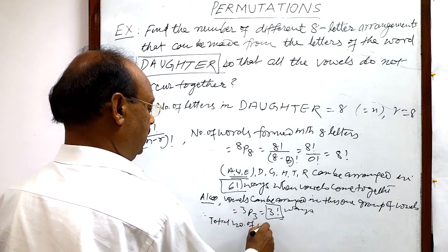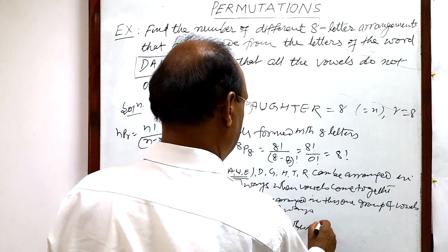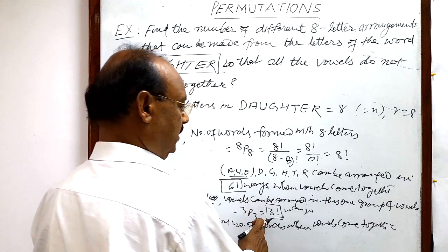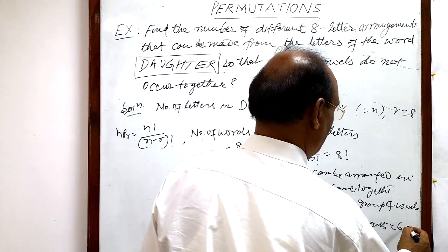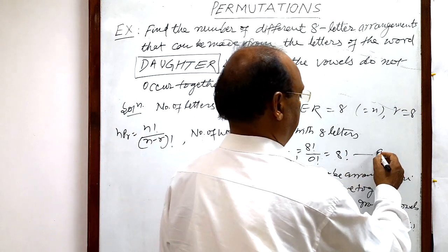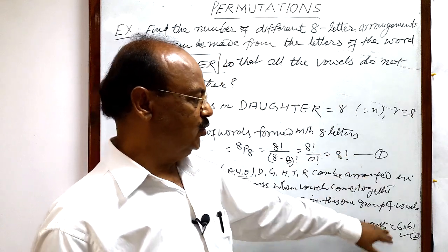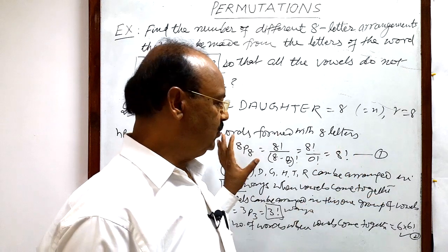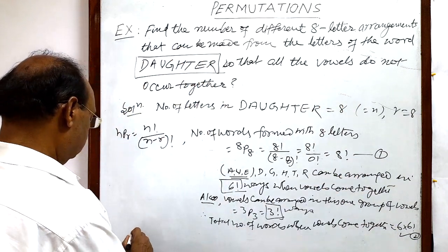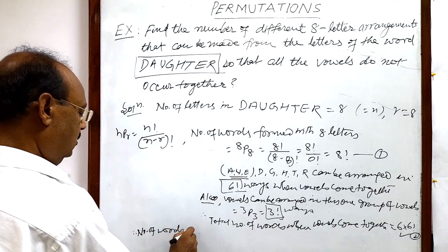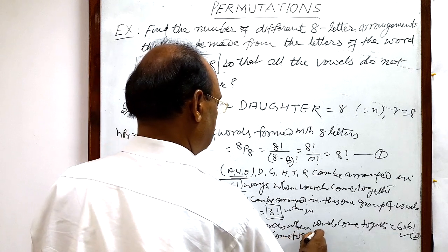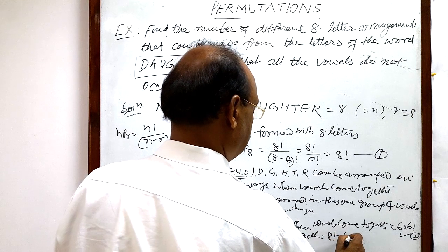So the total number of words when vowels come together equals 3 factorial times 6 factorial, which is 6 into 6 factorial. This is Case 1 (all arrangements) and Case 2 (vowels together). The number of words when vowels do not come together is Case 1 minus Case 2, which equals 8 factorial minus 6 into 6 factorial.